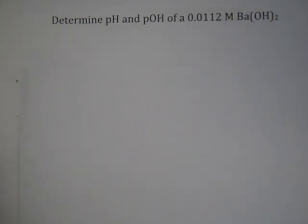Now we're going to move to the bases, and the first type of base we're going to do is a strong base, a third type of problem. In this one it's asking us to determine the pH and the pOH of a 0.0112 molar barium hydroxide solution.